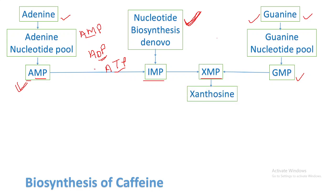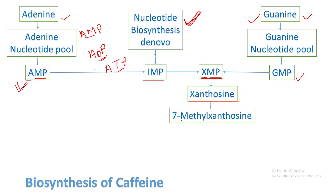Xanthosine monophosphate gets converted into xanthosine — meaning the phosphate group is removed in this step. Next, xanthosine gets converted into 7-methylxanthosine: one methyl group is added to the xanthosine molecule. The word 'xanthosine' means xanthine attached to ribose sugar — just as adenine attached to ribose sugar is called adenosine.